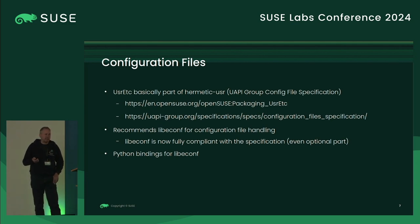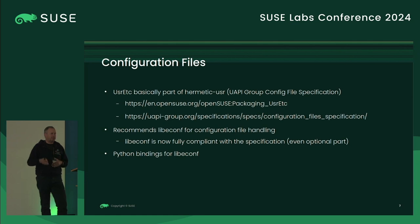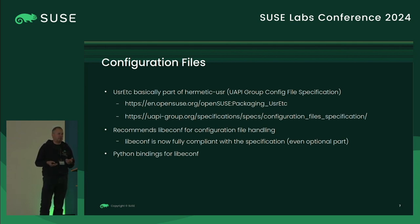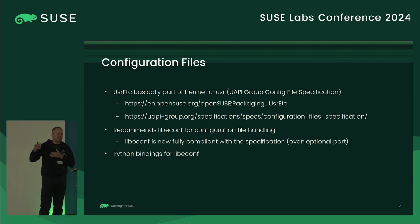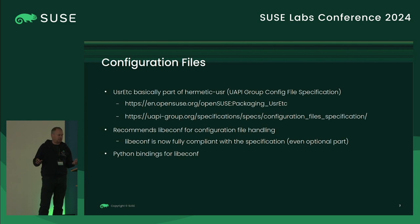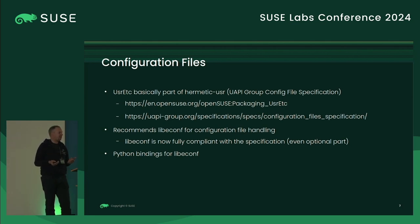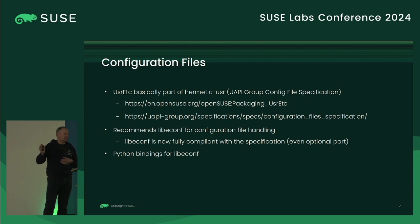Regarding configuration files: several years ago I created the user-etc project to separate the configuration files in /etc from the ones we provide and the ones the admin made changes to, so that a migration or update is later much easier, because you don't need to mess around with RPM .rpmsave and .rpmnew files. Since it's not only useful for enterprise customers with transactional update, but also for image-based deployments, the URP group did the same and last year we merged it together.